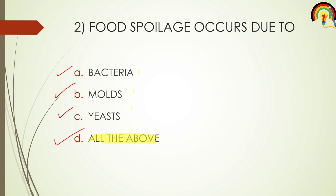Food spoilage occurs due to bacteria, molds, and also yeast. All three classifications of microorganisms are directly or indirectly responsible for food spoilage. Now the next question.